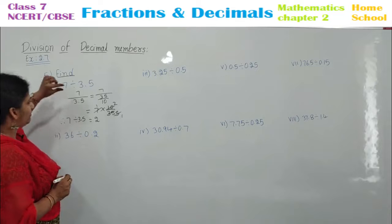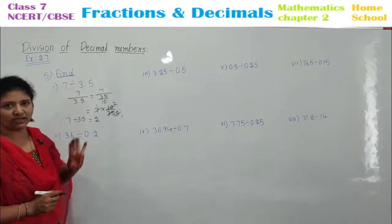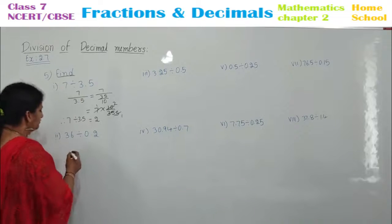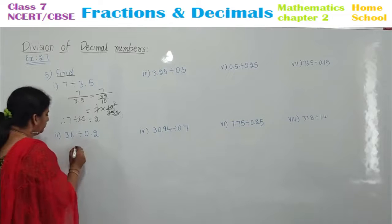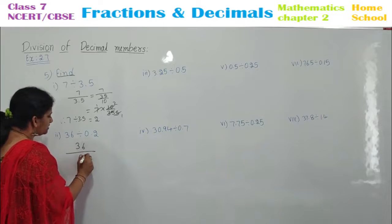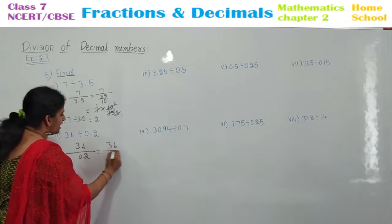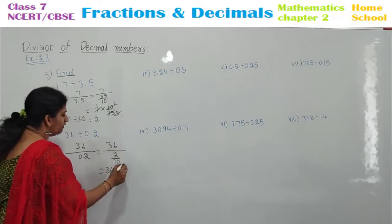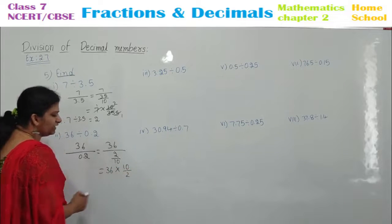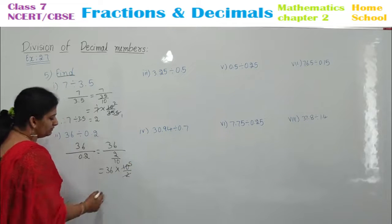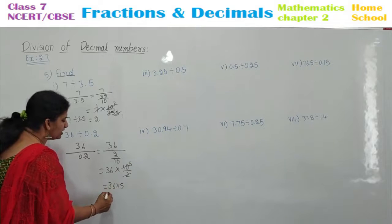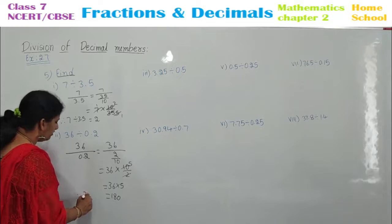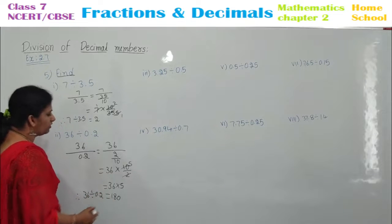Check the value carefully. Next one: 36 divided by 0.2. Remove this decimal: 36 by 2 by 10. Bring to the numerator by doing the reciprocal — that will be 36 into 10 by 2. Two 5s are 10. Multiply: 36 fives — 5 sixes are 30, 5 threes are 15, 15 plus 3 is 18. Therefore, 36 divided by 0.2 is equal to 180.